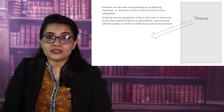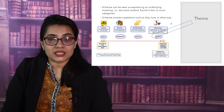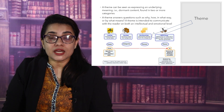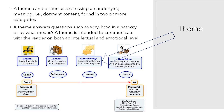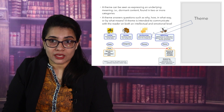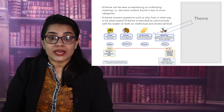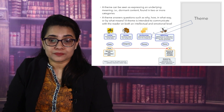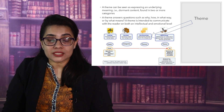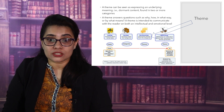A theme can be seen as expressing an underlying meaning — that is, a dormant content of your text or whatever text you are analyzing. Themes are found in two or more categories; naturally your themes emerge from your categories. A theme answers questions such as why, how, in what way, or by what means.